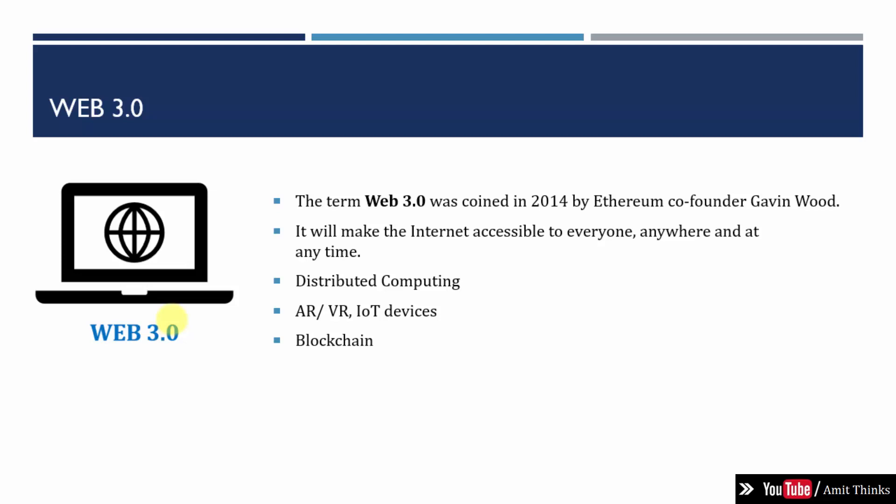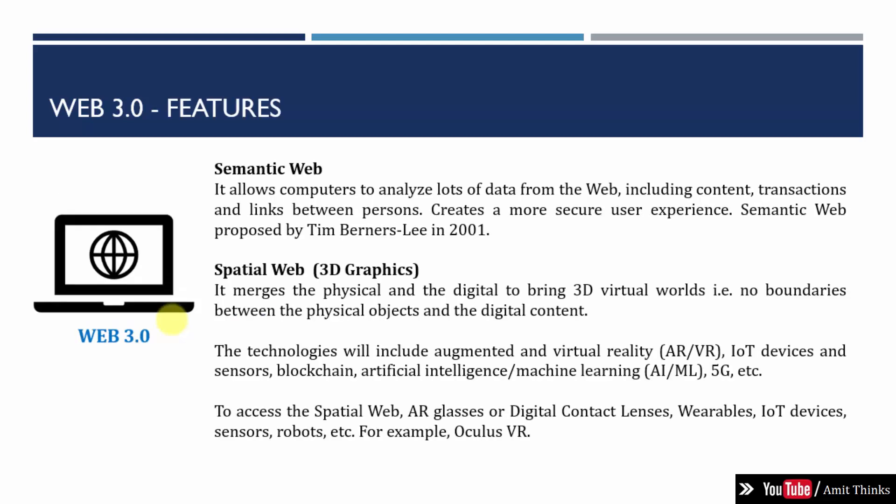Web 3.0 is considered the next generation of the web, which also includes metaverse features through which you can be part of the internet for the first time. Now let us look at the features of Web 3.0. The first is the semantic web, which will allow computers to analyze data from the web, including transactions, connections between persons, and links between persons.